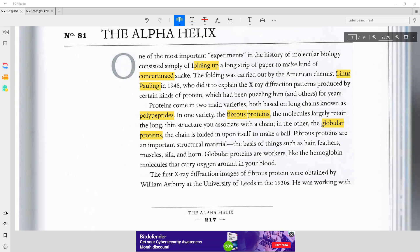Proteins come in two main varieties, both based on long chains known as polypeptides. In one variety, the fibrous proteins, the molecules largely retain the long thin structure you associate with a chain.